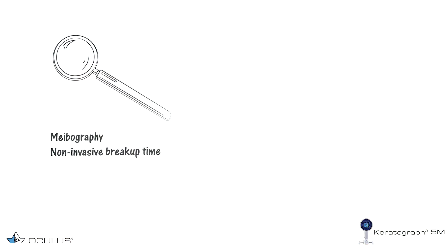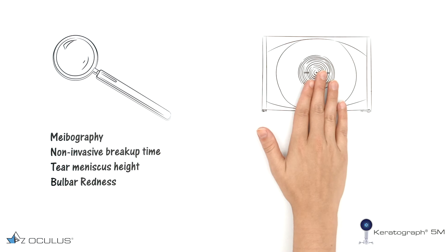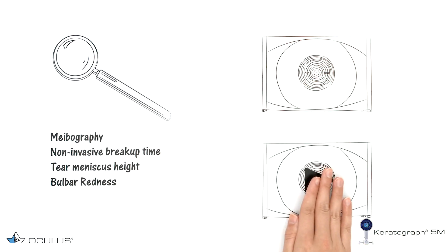As a diagnostic tool, it can perform meibography, non-invasive breakup time, tear meniscus height, and bulbar redness tests. The Oculus Keratograph 5M can also be used as an anterior segment camera for documentation of still images and videos.